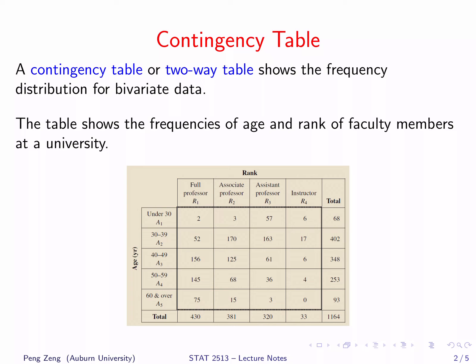The bottom-right number is the total number of faculty members in this dataset. Using a contingency table, we summarize the frequencies for all possible scenarios for the possible age-rank composition.